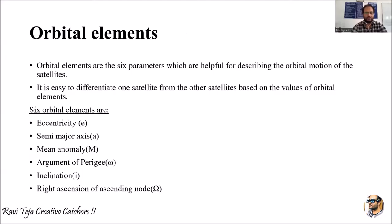Welcome to the course on satellite communications. In today's class we are going to learn about orbital elements. Orbital elements are six parameters which are helpful for describing the orbital motion of satellites — where they are moving, in which orbits, and with what speed or velocity. We can also differentiate one satellite from another based on the values of these orbital elements.